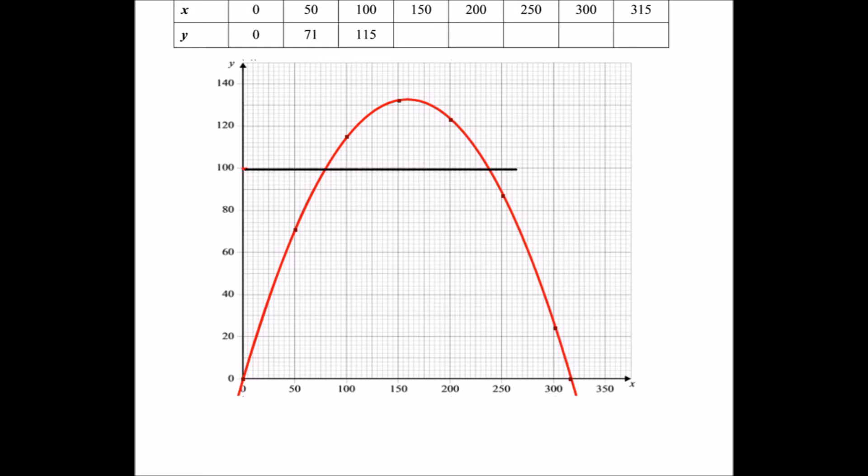So when y is 100, what's our x values? Because it says use our graph, we must show on our graph how we're doing it. So I'm going to go up to 100, which is nicely labelled for us. I'm going to draw a line and then I'm going to draw the vertical line down. Obviously, you're going to use a pencil and ruler to do this. And then we can have a look at working out what our x values are. So we know that our x axis is going up in fives. So we've got 55, 60, 65, 70, 75. It's about 80. And then to find the other one, let's count backwards from 250. So we've got 250, 245. It's about 240.